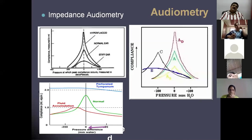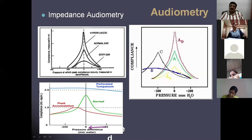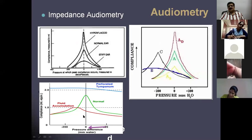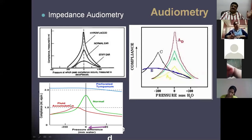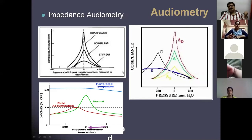In impedance audiometry, you can see a flat curve along with a shift because of fluid accumulation. This is the normal graph which you get in impedance audiometry. Because of fluid accumulation, the graph shifts to the left and there is a flattening of the curve. The tympanic membrane doesn't vibrate much.